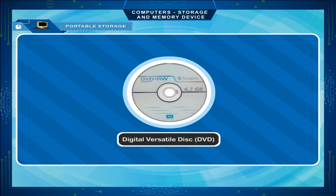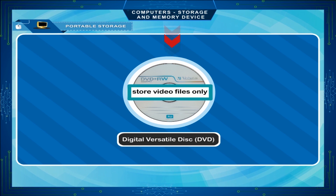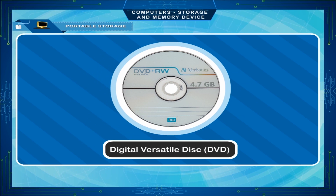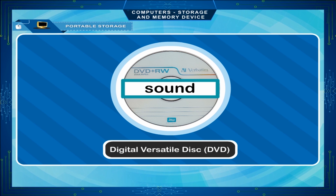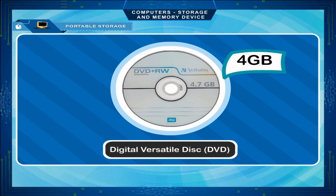DVD stands for Digital Versatile Disc. It is also called Digital Video Disc since initially it was used to store video files only. Like CDs, it is an optical storage device, similar in shape and size to a CD but with a greater capacity. It is generally used to record movies with high-quality video and sound, and also to back up data stored on hard disks. DVD storage capacity varies from 4 GB to 17 GB, and it needs a DVD drive to run.